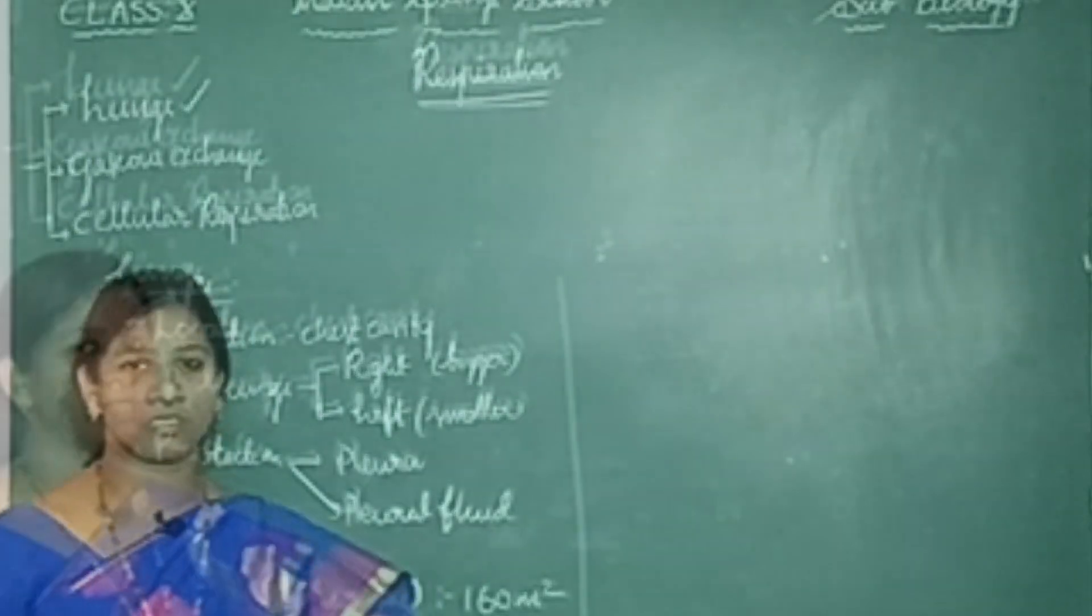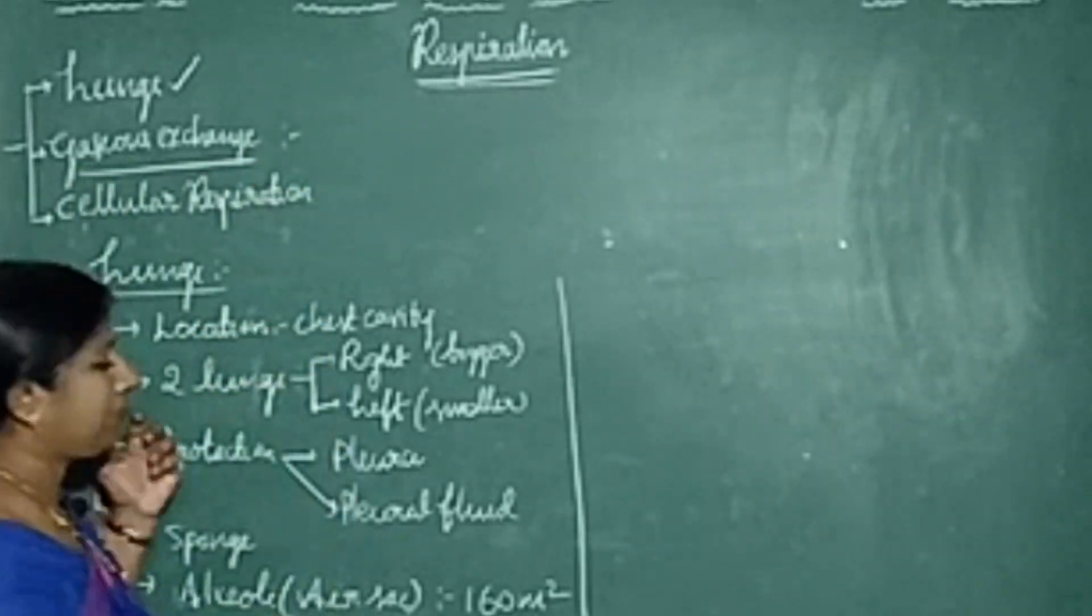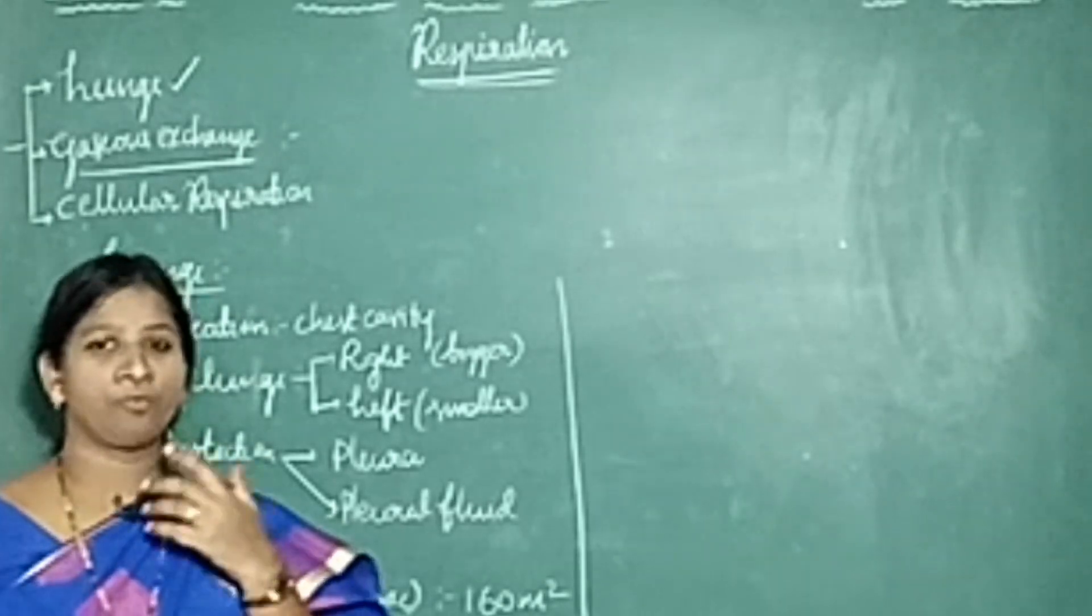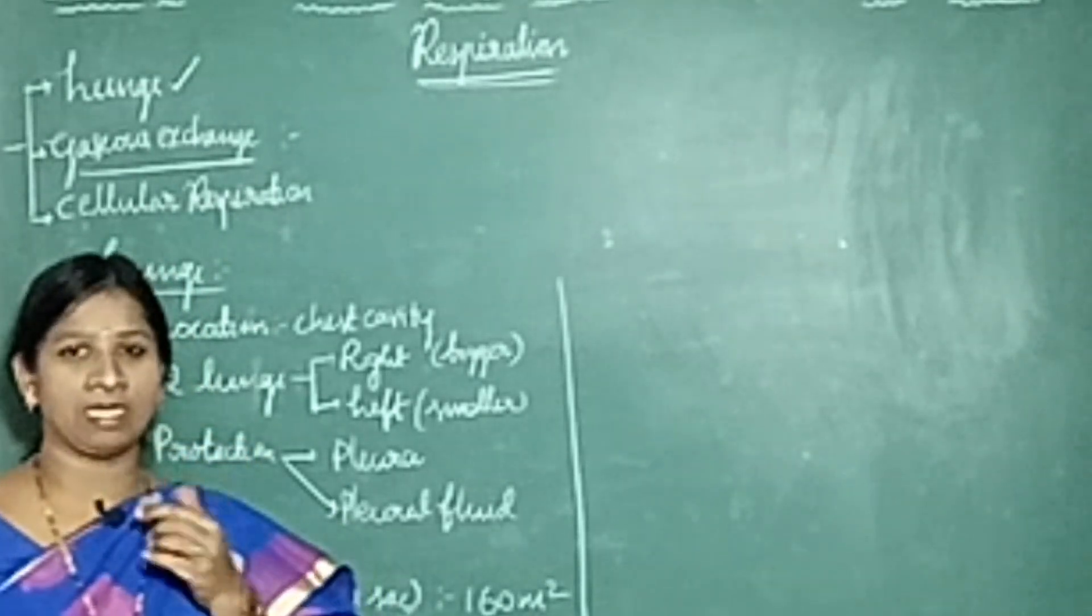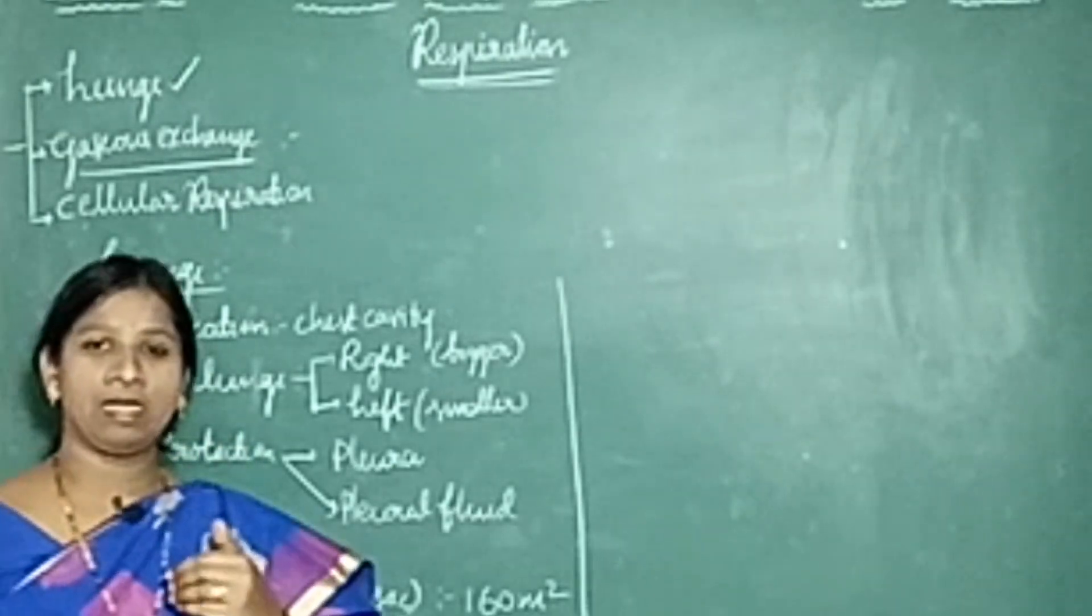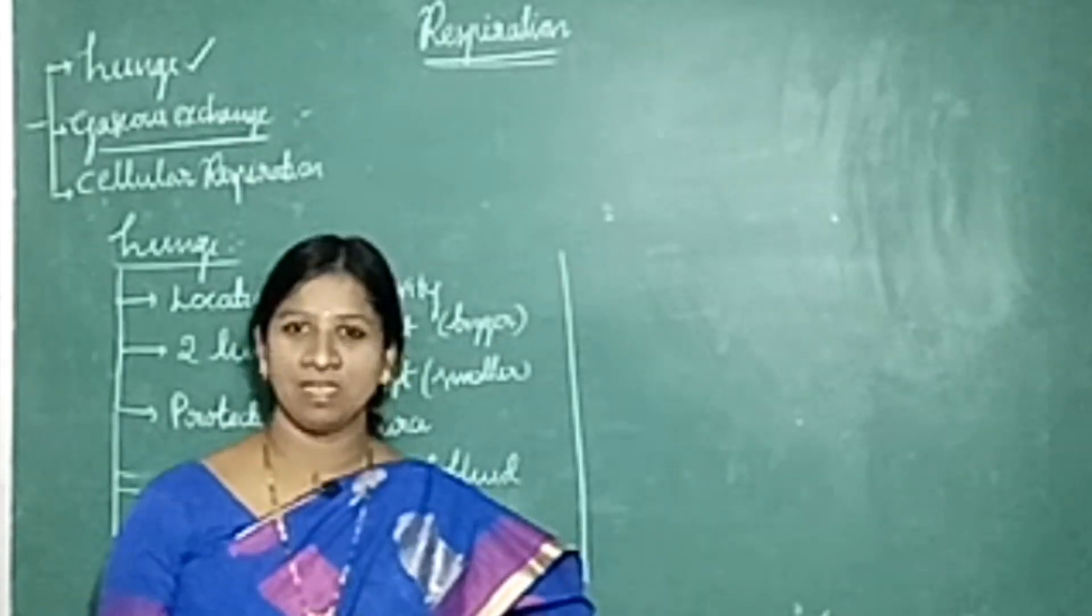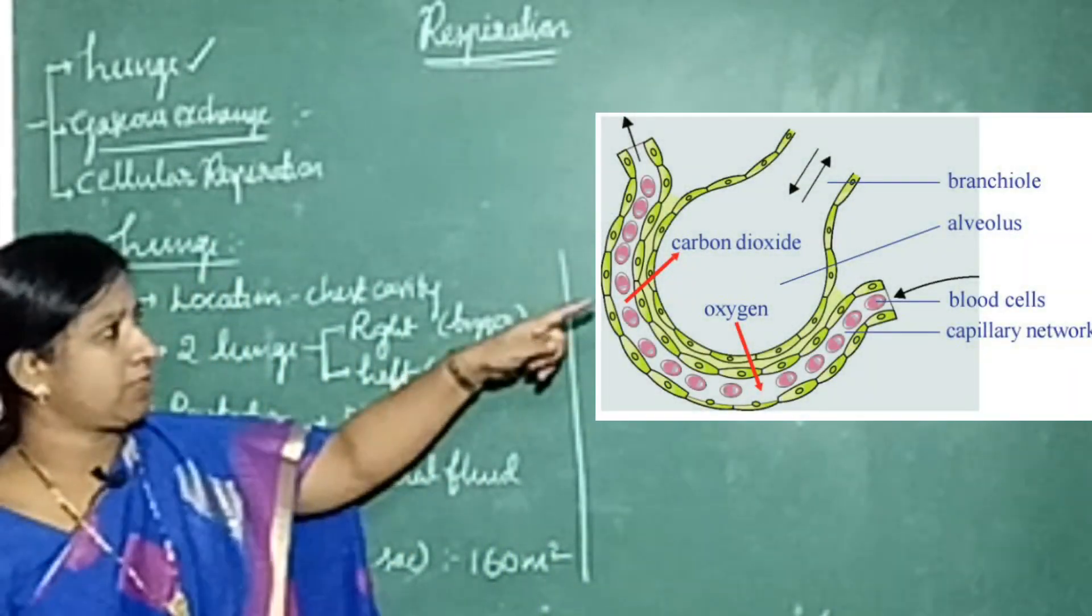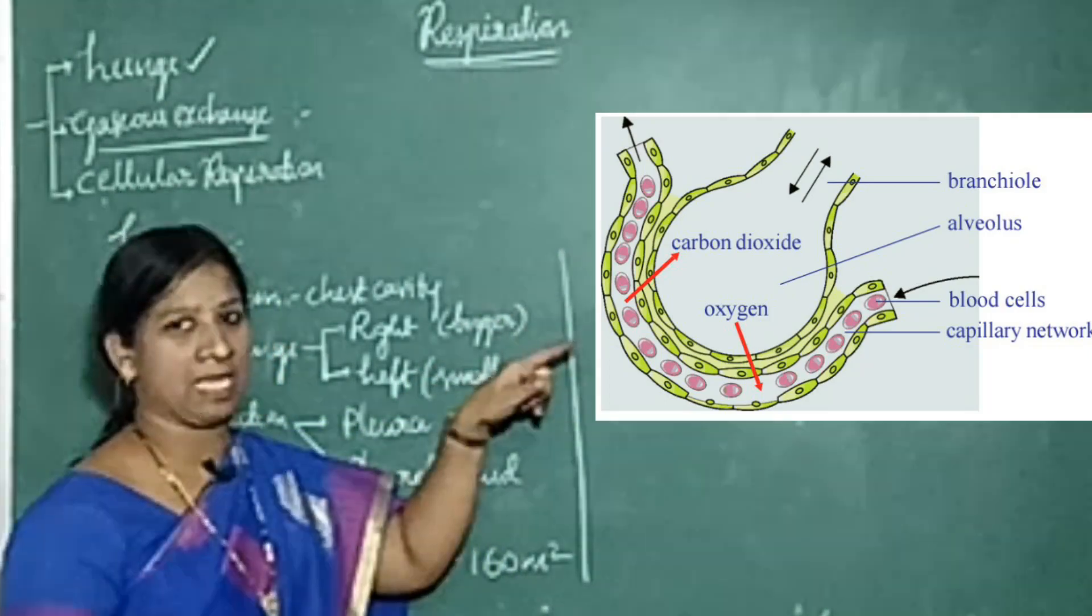So now we move on to the next concept - gaseous exchange. In the previous class we discussed that by the inhalation process, from the nostrils through the nasal cavity, pharynx, larynx, trachea, and from bronchi, bronchioles, and finally it reaches the alveoli. So when it reaches the alveoli, by seeing this figure you can understand these alveoli are surrounded by blood capillaries.